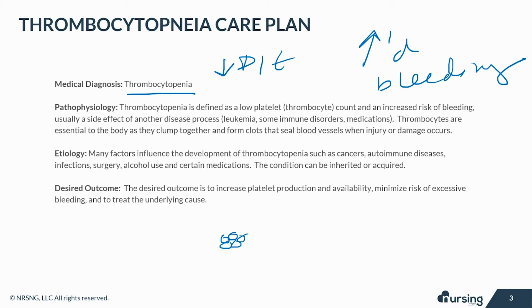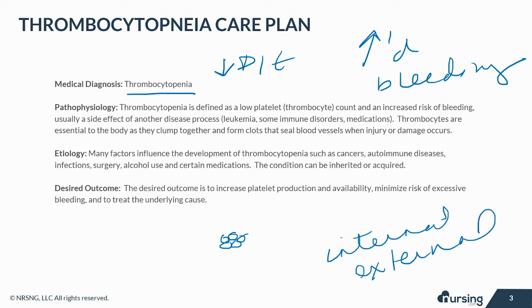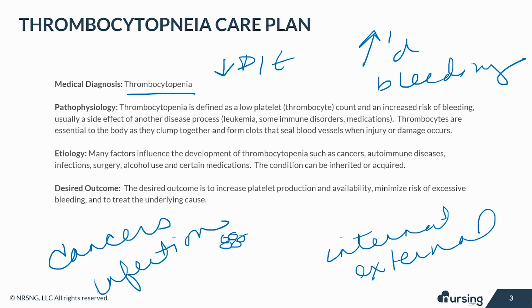If bleeding does occur, it can be internal or it can be external. Many factors influence the development of thrombocytopenia, such as cancers, autoimmune diseases, infections, surgery, alcohol use disorder, and also certain medications.